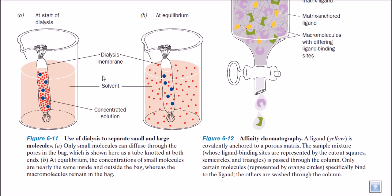However, if we need to separate one particular type of protein with a specific molecular weight, we cannot rely on dialysis alone. We need to further carry out size exclusion chromatography or gel filtration chromatography to separate our protein of interest. For a generalized purpose, we can use the dialysis technique.